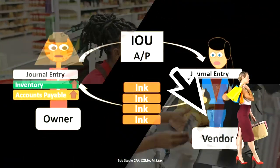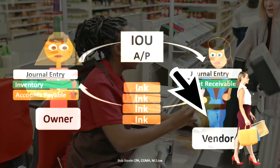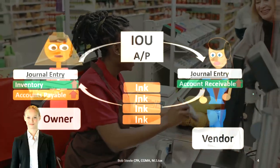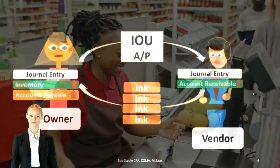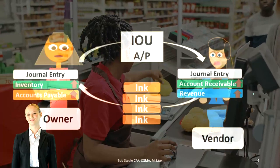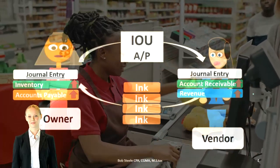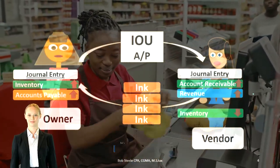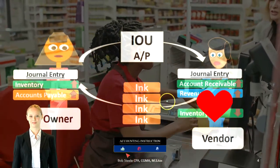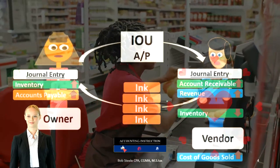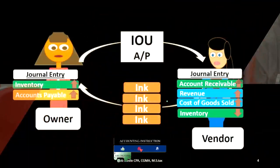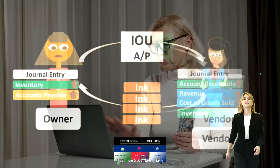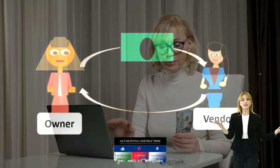On the vendor side of things, they have now had the transaction as well. They have done the work. Therefore, they have a receivable that is due from the owner and they have earned revenue at that point in time. They're also decreasing their inventory by making this transaction and they should record the related cost of goods sold at that point in time.